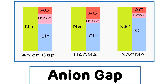Hello everyone. Today we are going to discuss one important biochemical tool which is used for the assessment of acid-base balance, as well as for the diagnosis of different causes of metabolic acidosis — that is, anion gap.